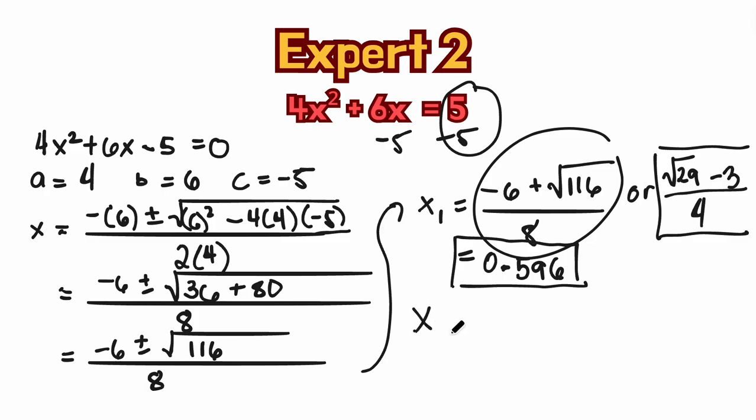For the root number 2, we will use the negative number. So we have, I mean the negative side of this equation. Negative 6 minus square root of 116 all over 8.